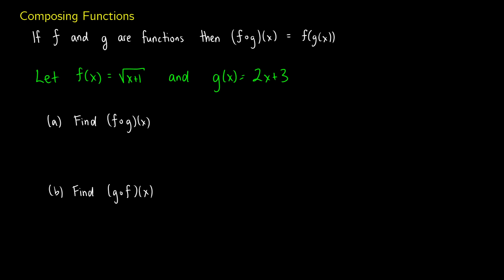This video is about the composition of functions. I'm going to start with an example and then do the abstract image afterwards. So let's say we have two functions f and g and we want to compose them, so we have f dot g of x. This is really just the same thing as saying f of g of x — we're going to stick the function g of x into the function f and evaluate it.